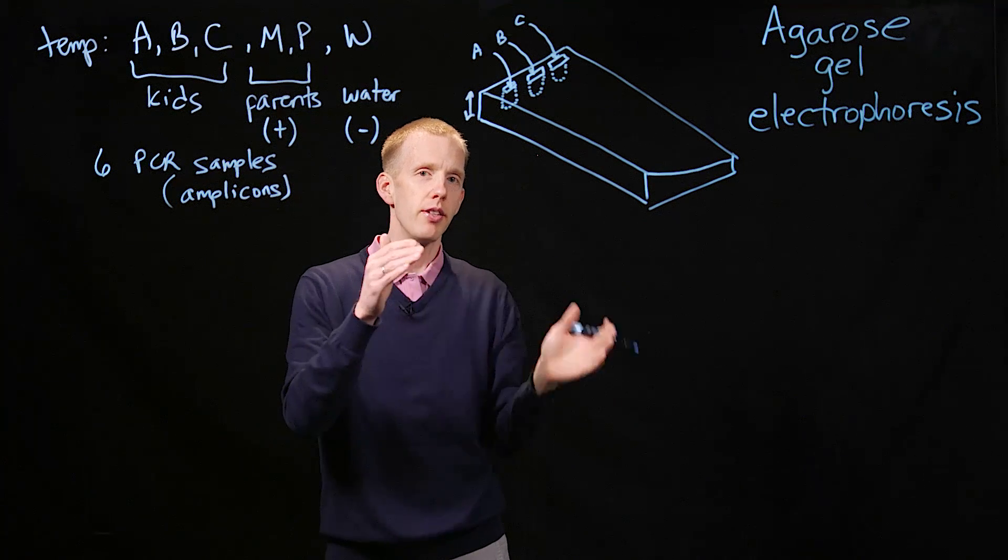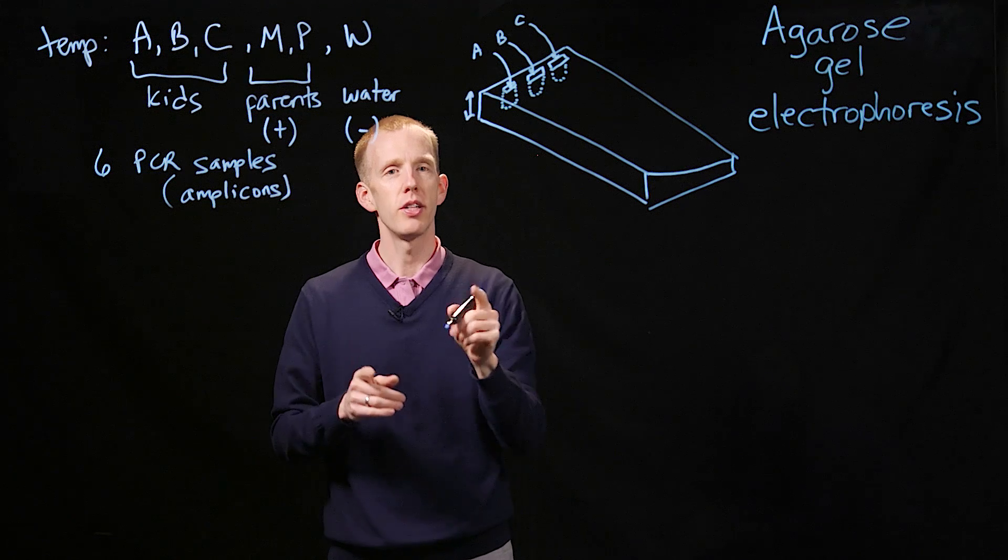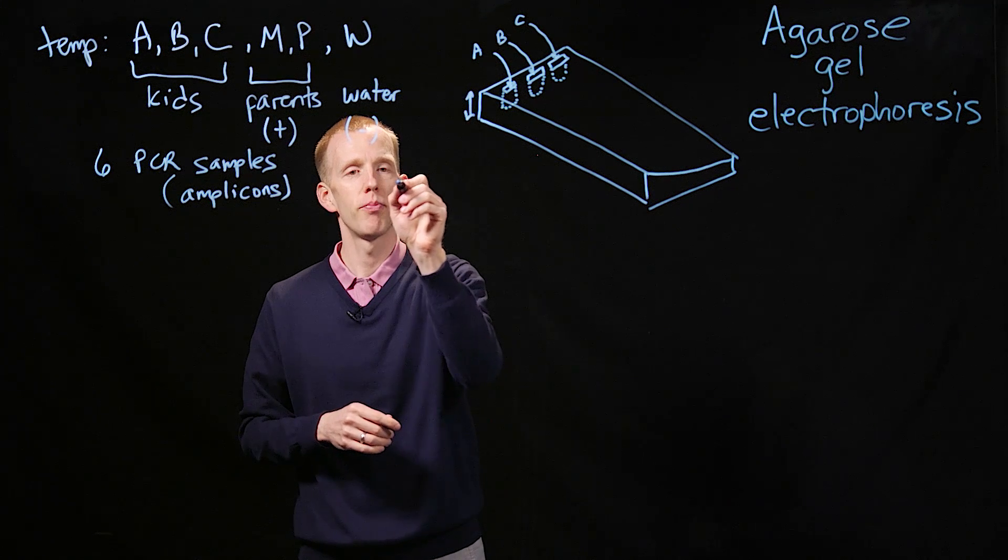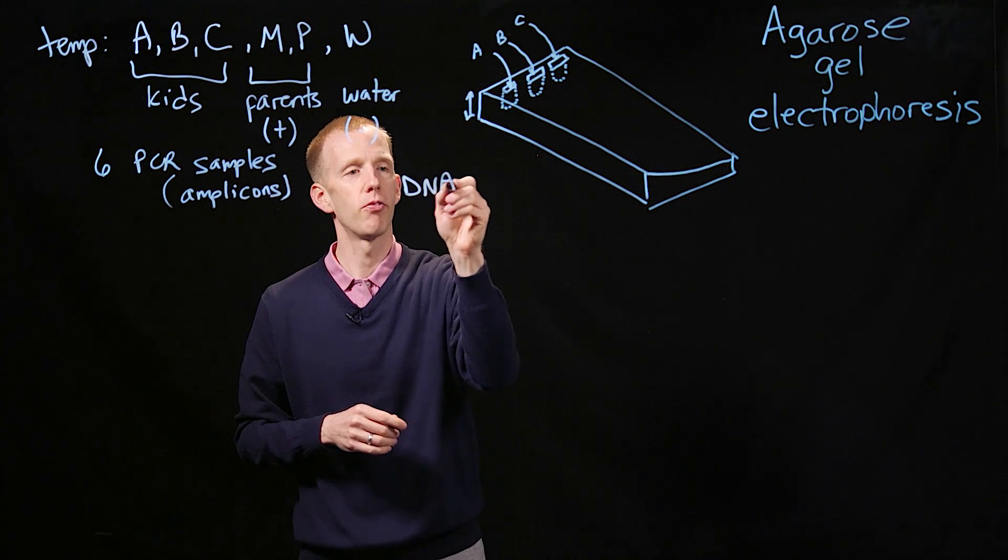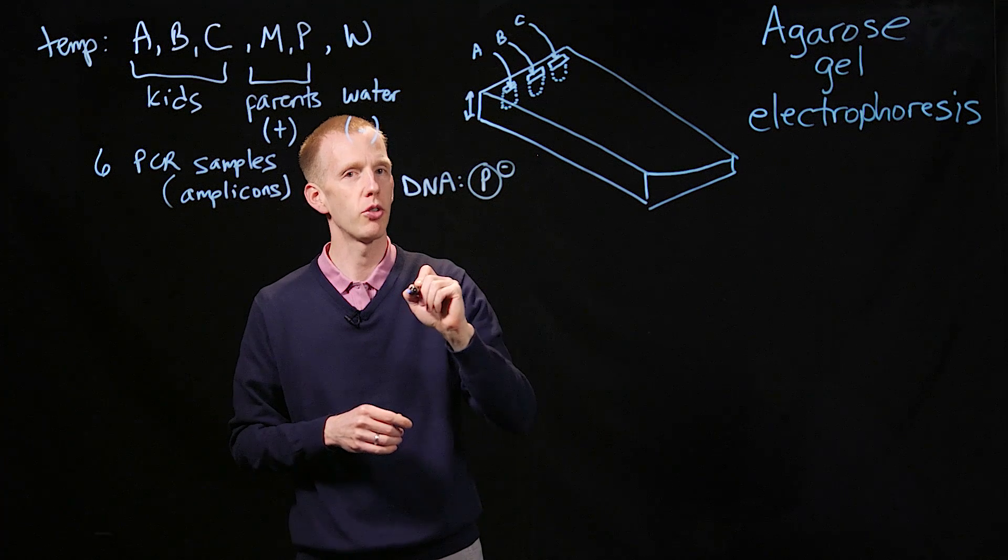Now we need to separate these DNA molecules based on size. And the way that we do that is that we know that DNA has a negative charge because of the phosphate backbone. The phosphate molecules have a negative charge.